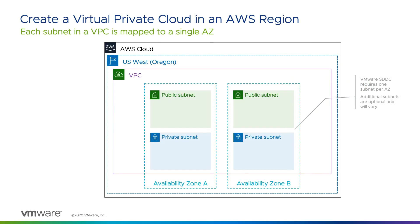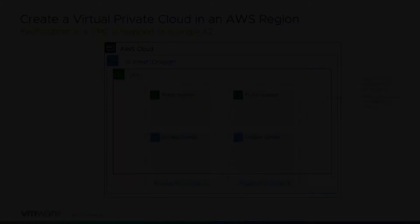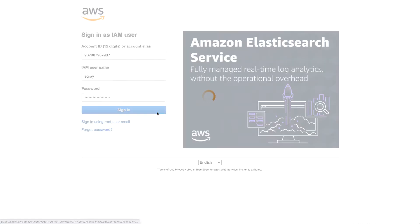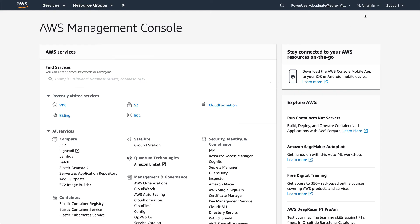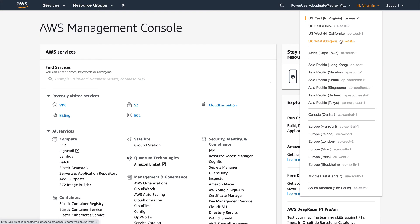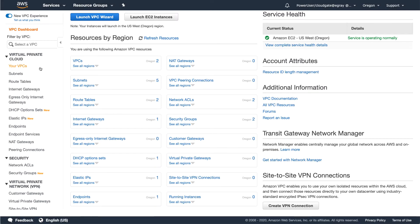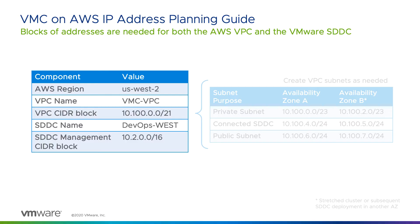After you've decided on a region, the next step in preparing your AWS infrastructure is to create a new Virtual Private Cloud, or VPC, that you will later link to your VMware Cloud SDDC. This requires an AWS account, which you can easily create if you do not already have one. Creating a VPC is straightforward, but before you begin, you will need to decide on the private network address range that you want to assign to the VPC and subnets, because it cannot be changed later.